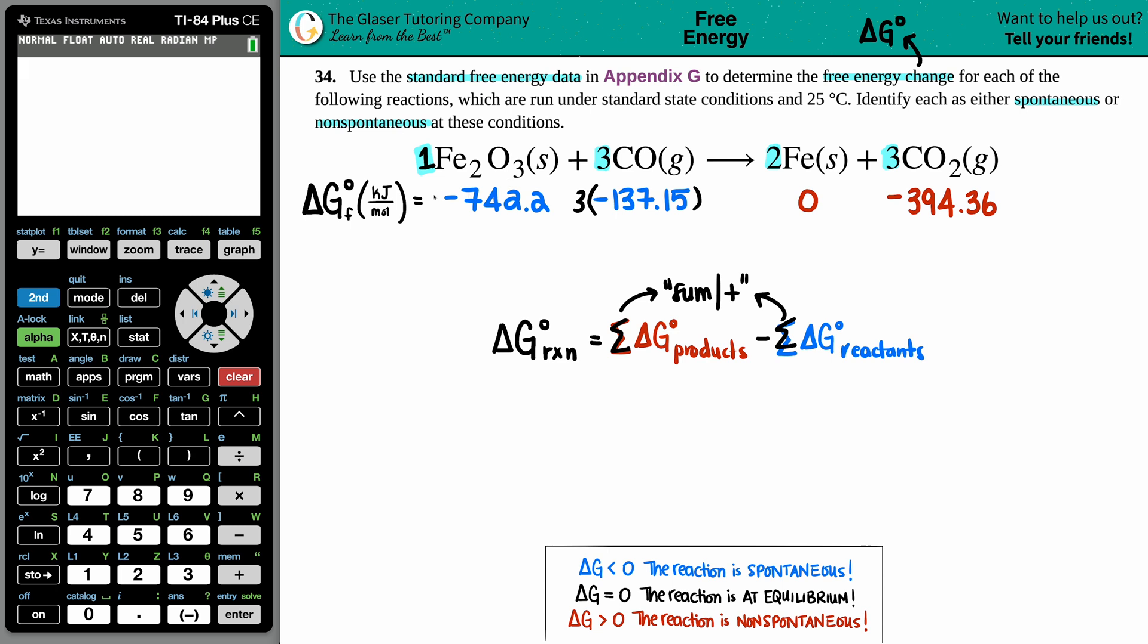I'm going to do that for the whole process. You had one Fe2O3, so multiply by one. Two Fe's, so zero times two—that's just zero. Three carbon dioxide, so I take the negative 394.36 and times it by three. Now I have to get that sum. Literally in the balanced equation, it's Fe2O3 plus CO, so I take this value and add it to this value. Same thing on the product side: Fe plus CO2.